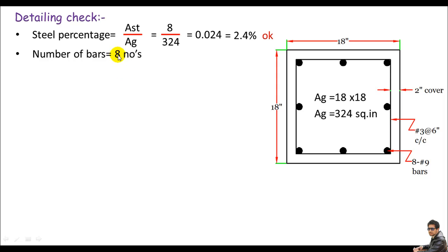Next, check the number of bars. We have 8 bars total. According to ACI 318, the minimum required for rectangular ties is 4 bars. Since 8 is greater than 4, we are okay here.